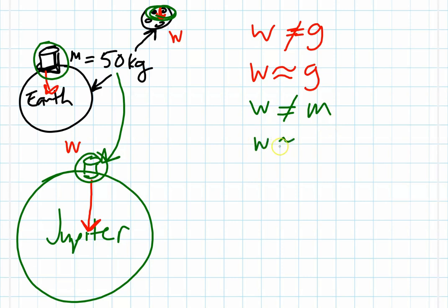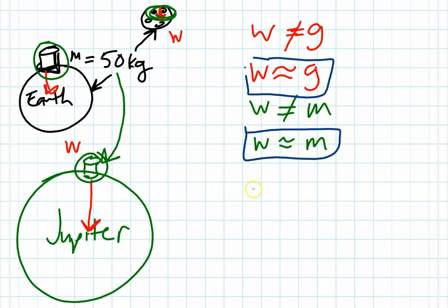Weight is directly proportional with mass. If you take and combine these two thoughts, we can get into establishing what weight is. Weight is an object that is being pulled to a planetary surface. You have a sensation of weight as you stand on a floor or sit in a chair — you can feel that sensation.